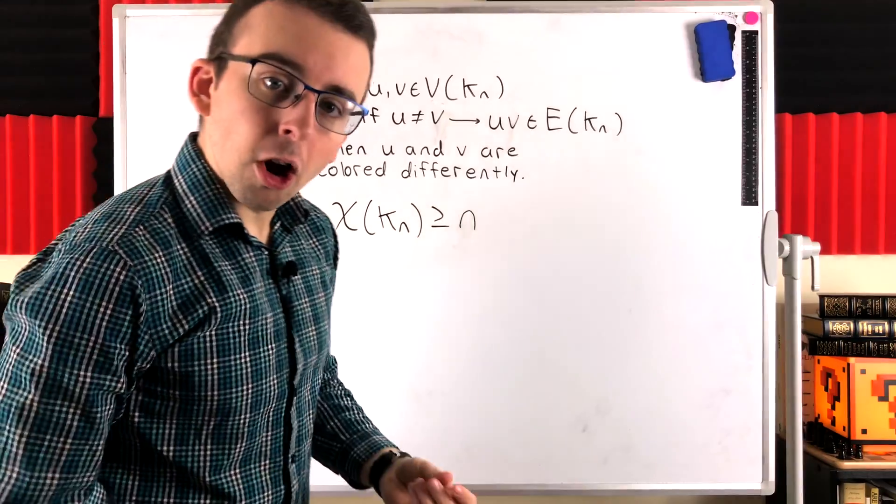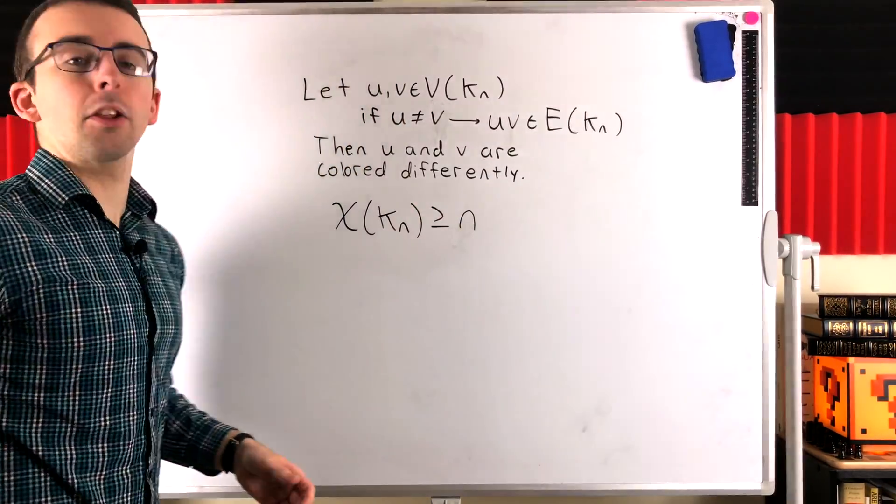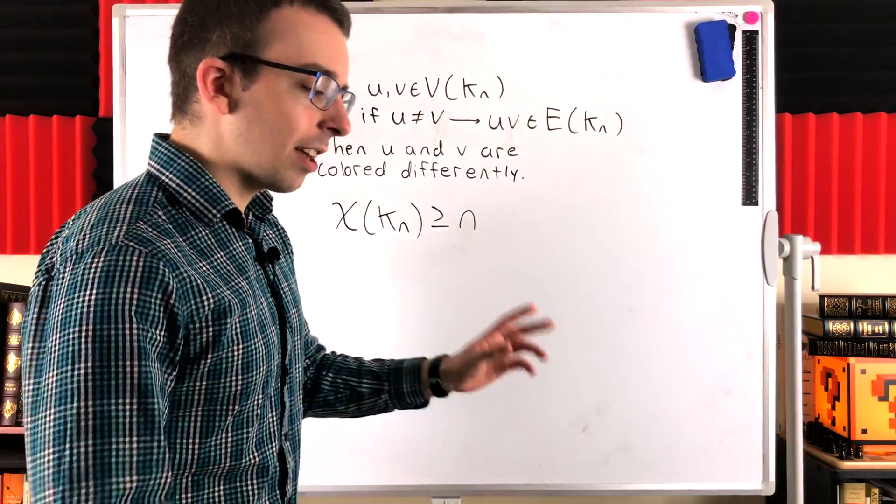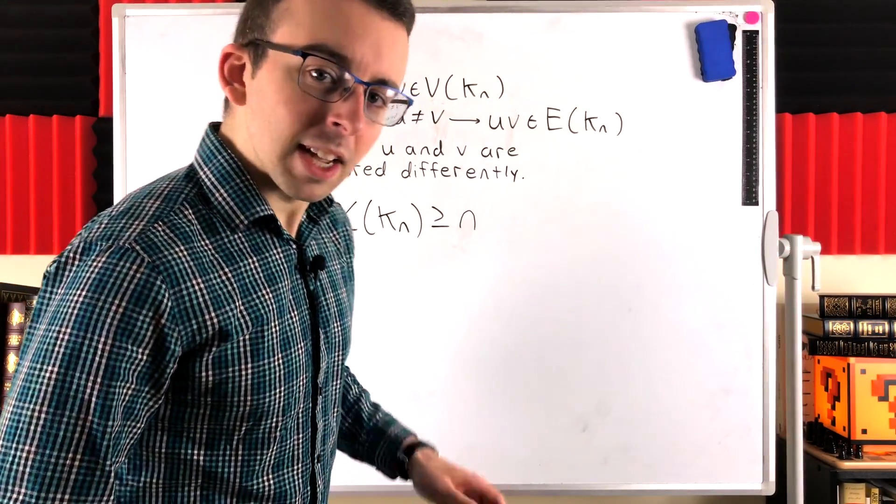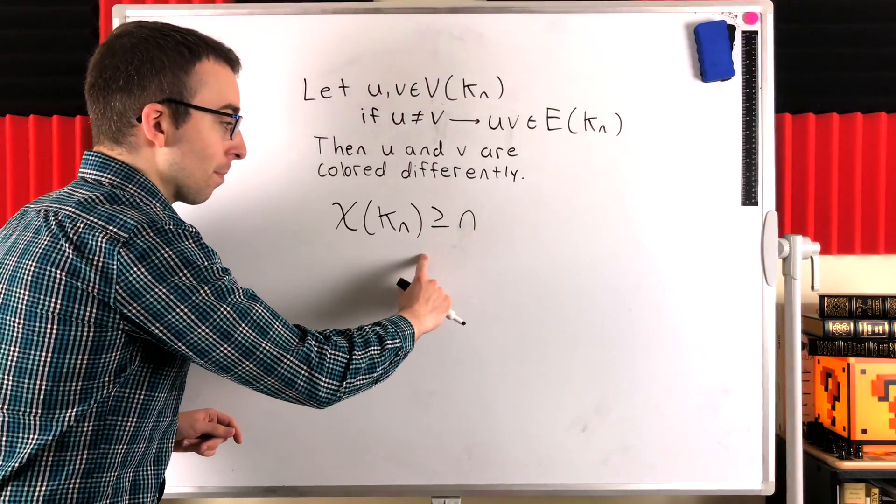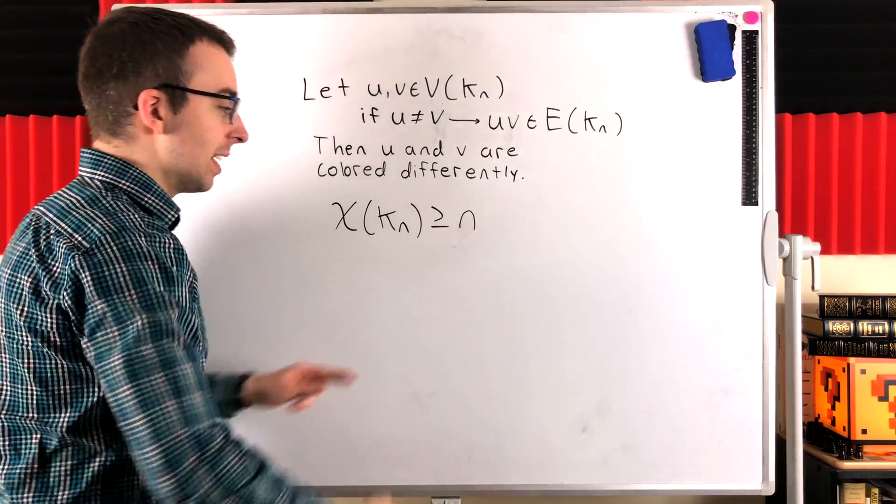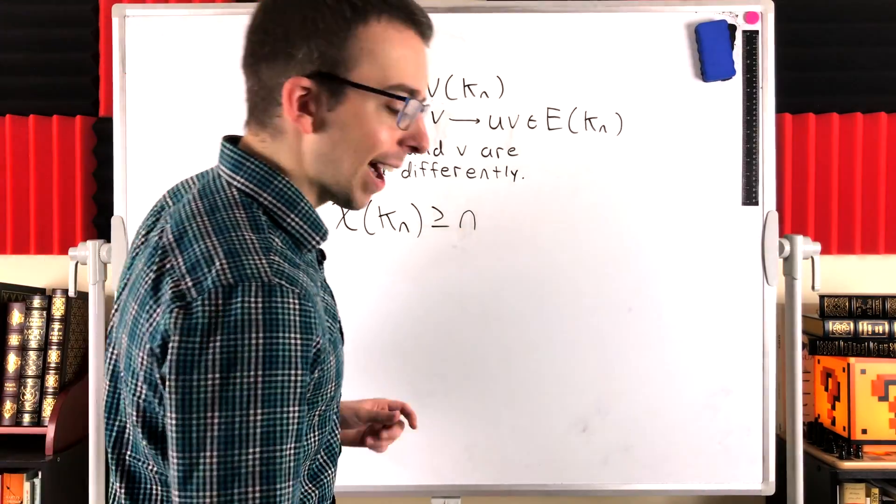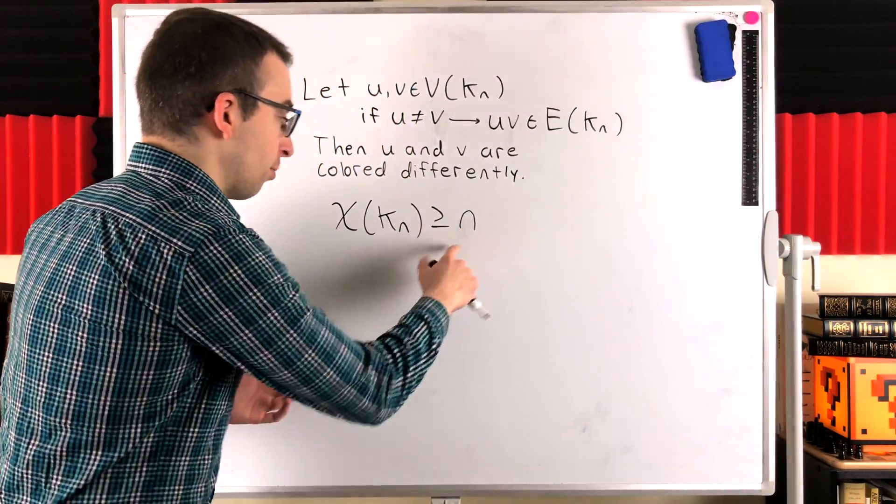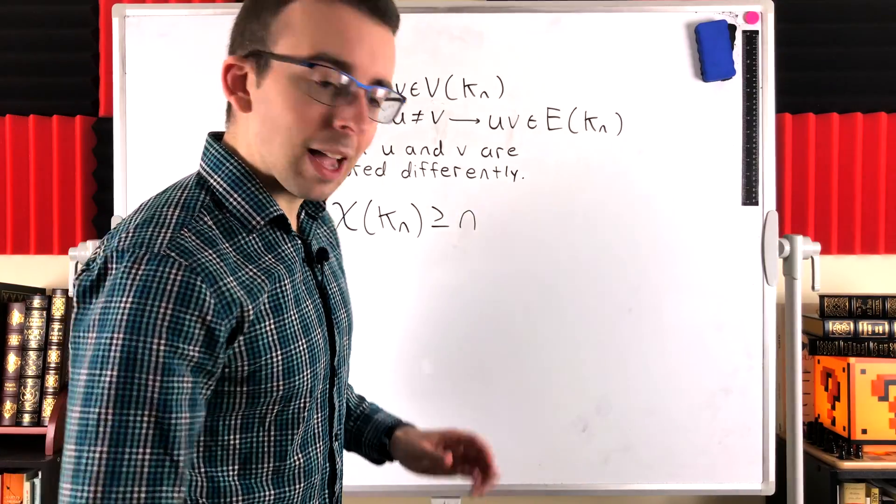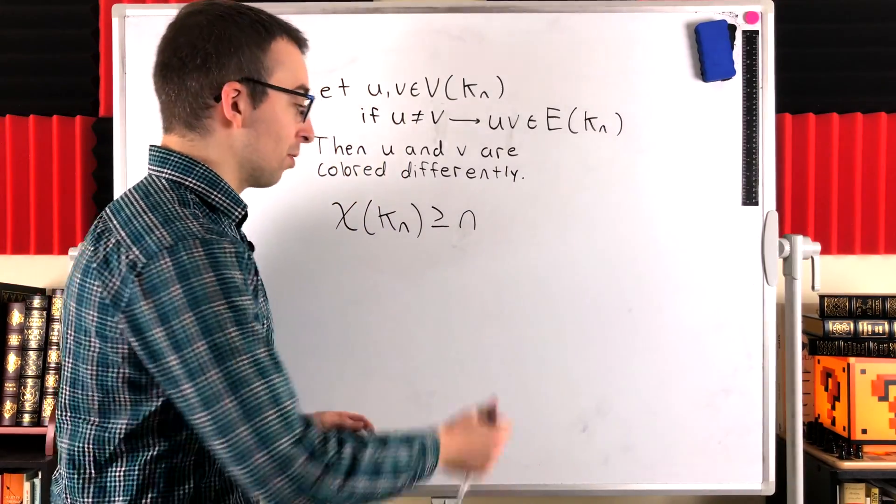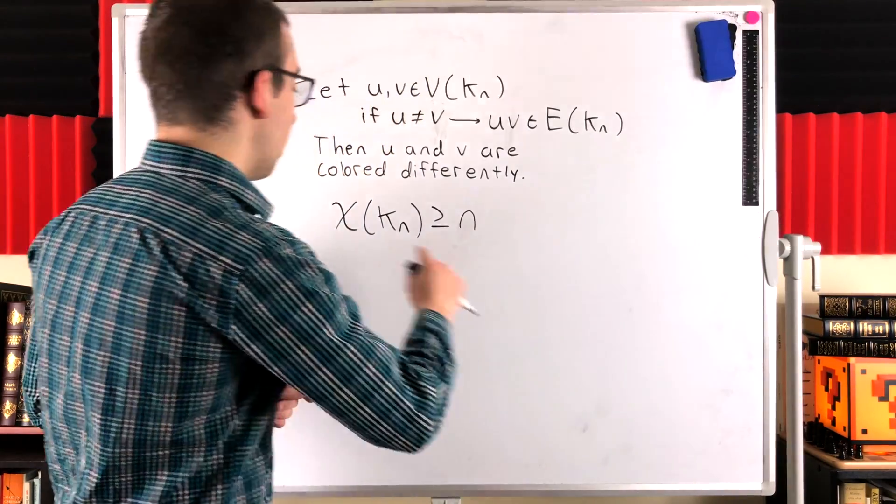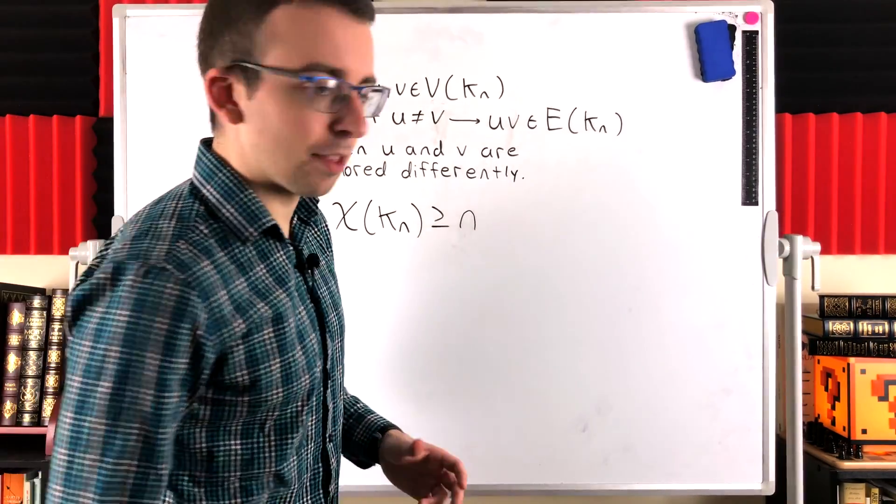In order to show that the chromatic number of a graph is equal to a particular number, in this case n, you can think of it as a two-step process where the order of the steps doesn't matter. We've got to show that the chromatic number is at least this particular number, in this case n, so we need at least this many colors to color the graph. And then we need to show that this many is, in fact, enough. And in combination, that shows that this is the minimum number of possible colors that we need to color the graph, which is the chromatic number of the graph.